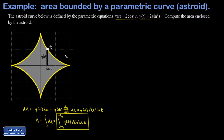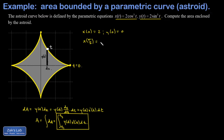Before we set things up we need to find the initial and final t values. x(0) = 2·cos³(0) = 2 and y(0) = 2·sin³(0) = 0, so the point (2, 0) corresponds to t = 0. At t = π/2, x(π/2) = 2·cos³(π/2) = 0 and y(π/2) = 2·sin³(π/2) = 2, so this first-quadrant section runs from t = 0 to t = π/2.